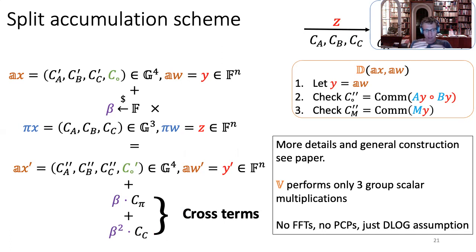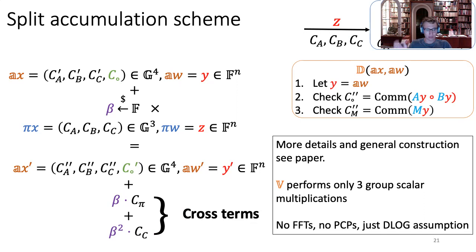Given our powerful Theorem 1, this is all we need to construct IVC. From something really simple, we can construct something really powerful.